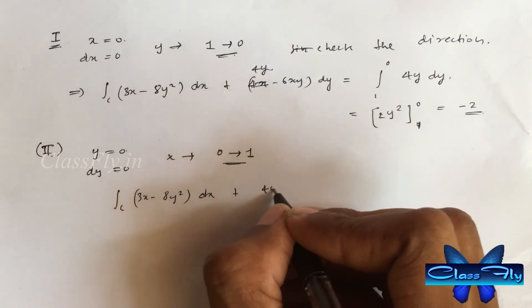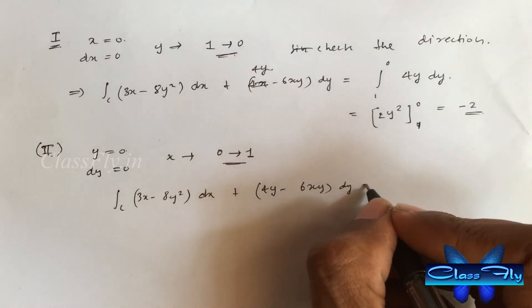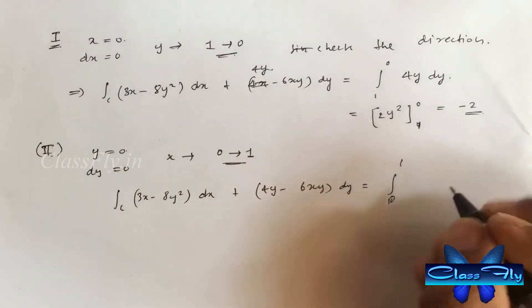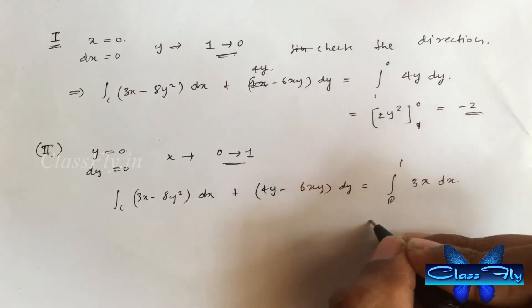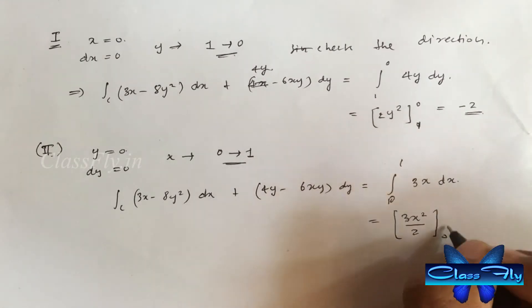Integral c 3x minus 8y square dx plus 4y minus 6xy dy is equal to integral 0 to 1, 3x dx. After integrating and applying the limits, we get 3 by 2.